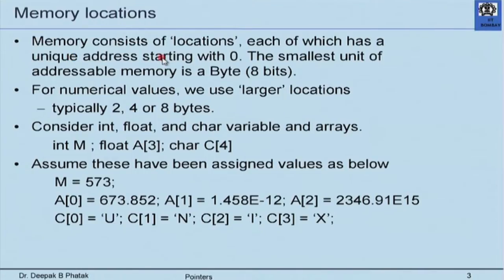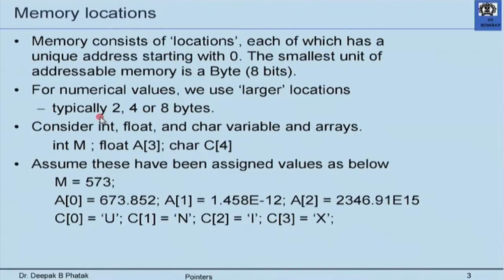The way I like to introduce pointers to students is to tell them that memory consists of many locations, each location has a unique address. Usually the address inside the machine starts with zero. The smallest unit of addressable memory is a byte — that means you can address individual bytes. For numerical values, we use larger locations made out of composite bytes: two bytes, four bytes, eight bytes together give you a larger location.